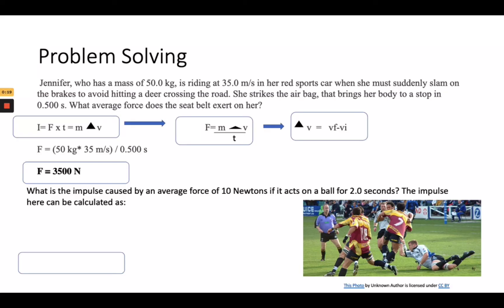For our second problem, what is the impulse caused by an average force of 10 newtons if it acts for 2 seconds? The impulse can be calculated as force times time. We have the force which is 10 newtons and the time is 2 seconds, which brings us to 20 newton seconds.